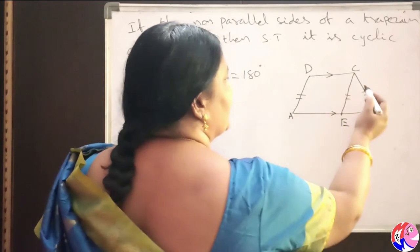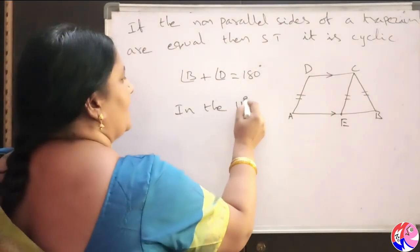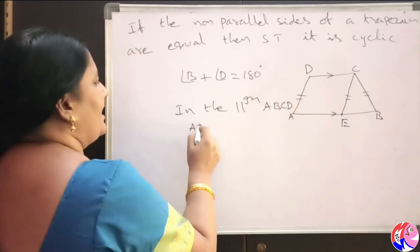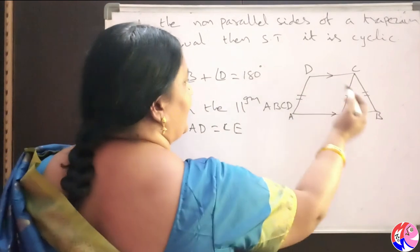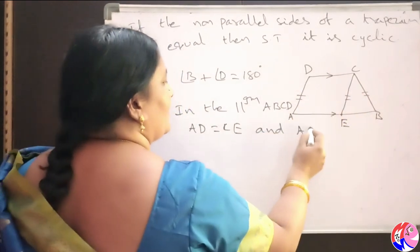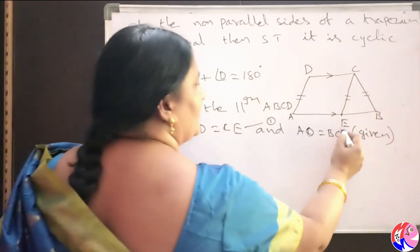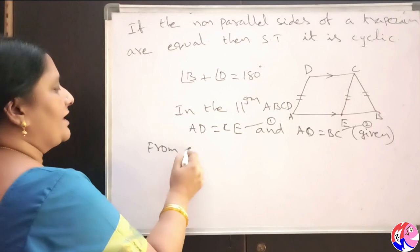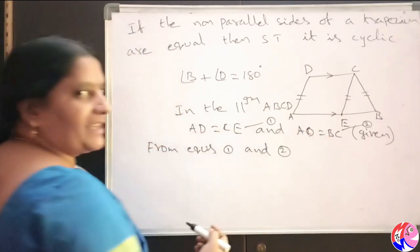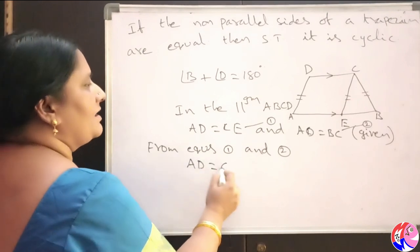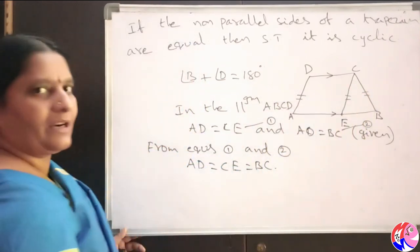In the parallelogram AECD, AD is equal to CE — opposite sides are equal. And it is given that AD equals BC. Taking these as equation 1 and equation 2, from equations 1 and 2 we can say AD equals CE equals BC. So AD, CE, and BC are all three equal.